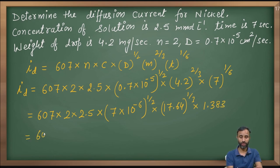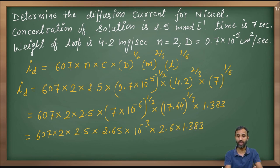It is equal to 607 into 2 into 2.5 and 7 raised to power 1 by 2, that is 2.65 and 10 raised to power minus 6 raised to power 1 by 2, that is 10 raised to power minus 3. 17.64 cube root, the value is nearly 2.6 into 1.383.